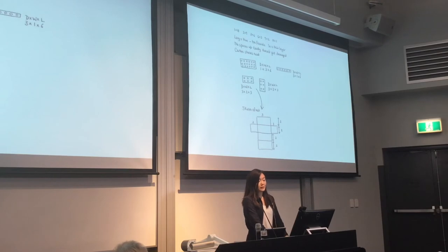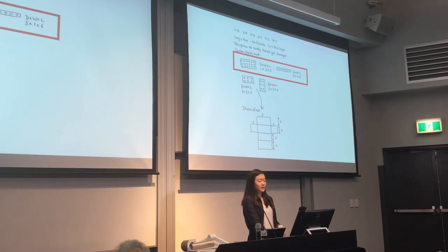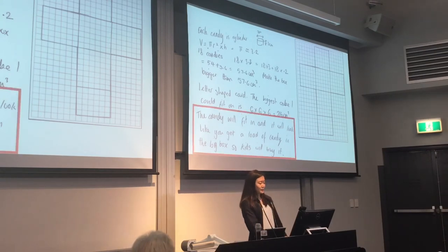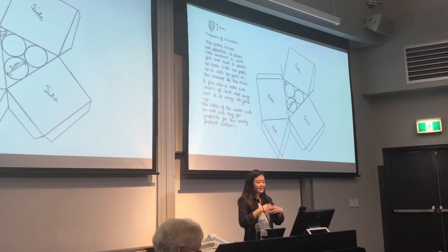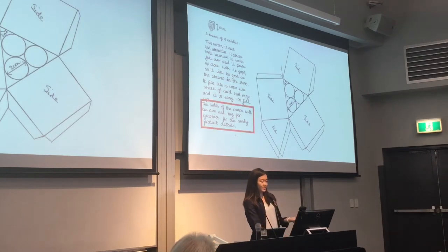Some student work samples may look like this. One student has done a good old rectangular prism. He said that if he has everything on one level, three by six makes it a little bit too thin and too flexible, so he's made it three by three by two. Another student tried to make the biggest cube he could fit — six by six by six — arguing it will look like you get a load of candy. And some students with a flair for design and art get a chance to shine, making cartons that are neat and attractive with nice big graphics.